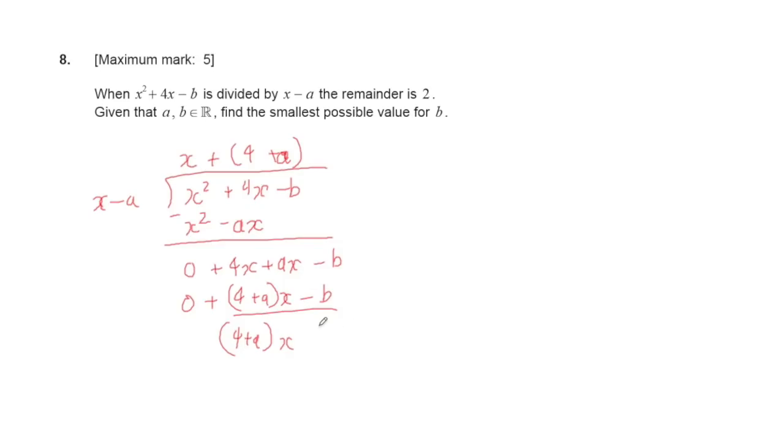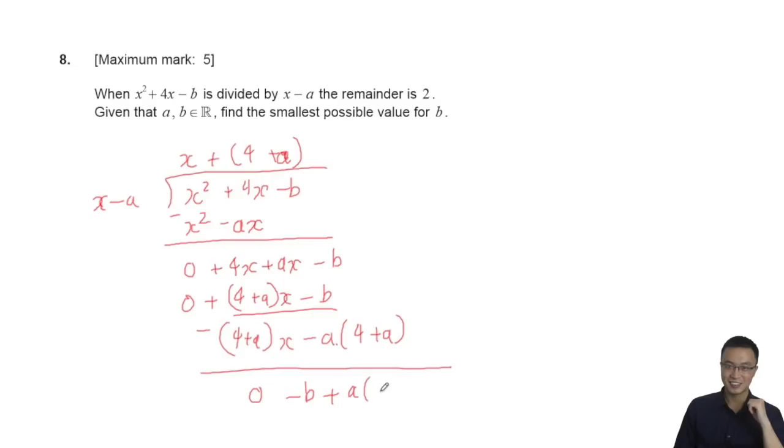After subtraction, the remainder is -b + a(4 + a), which simplifies to a(4 + a) - b. This remainder equals 2 according to the problem.